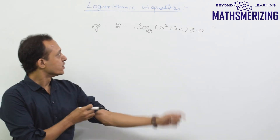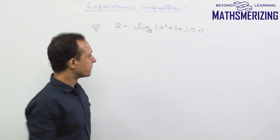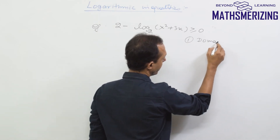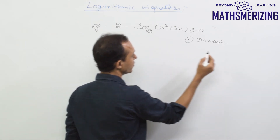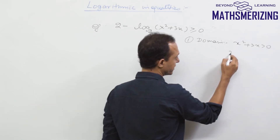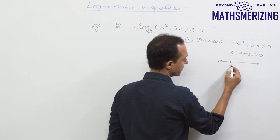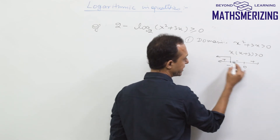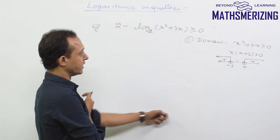For example: 2 minus log base 2 of (x² + 3x) is greater than or equal to zero. First, we find the domain. The base 2 is already greater than zero and not equal to one, so the only condition is x² + 3x > 0, which factors as x(x + 3) > 0. This gives x < −3 or x > 0 as the domain condition.